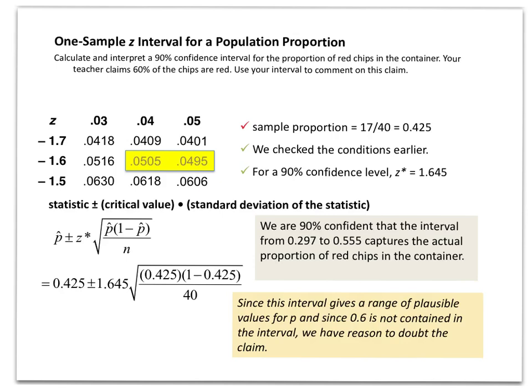This is the problem we did in class where we needed to calculate and interpret a 90% confidence interval for the proportion of, we actually looked at white chips in our container. I claimed there were 60% of the chips were white. We created a confidence interval using your sample proportions. I'm going to use the example 17 out of 40, which is 0.425. And we created our confidence interval.